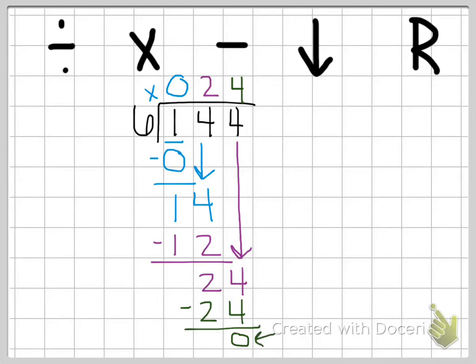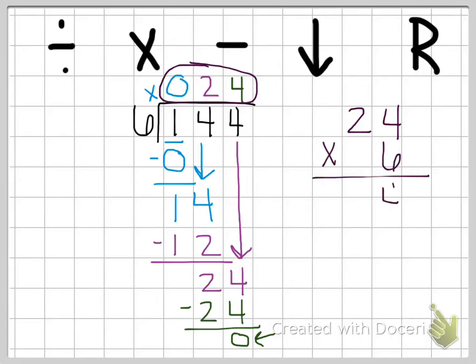Remember that we need to check it. Our answer is 24. So I'm going to multiply 24 times six. Four times six is 24. Two times six is 12, plus two is 14. That gives us 144, which is what we started with.